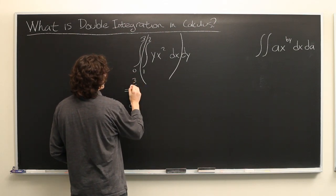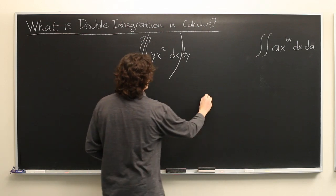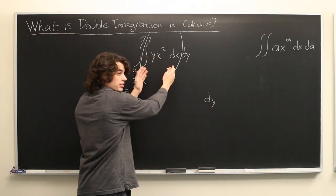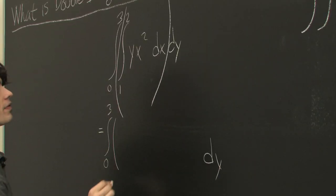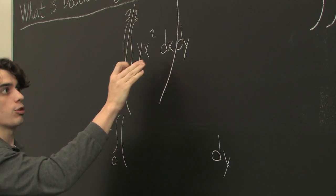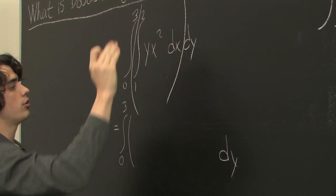We'll keep the integral that we have on the outside and we'll see what this equals. Okay. So we're taking the integral of yx² with respect to x from one to two.